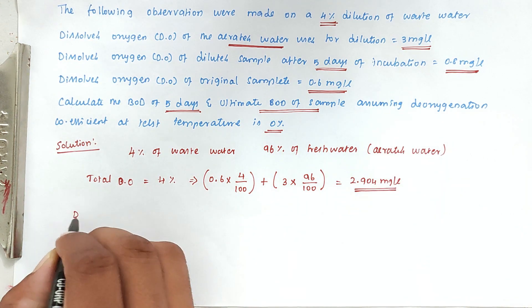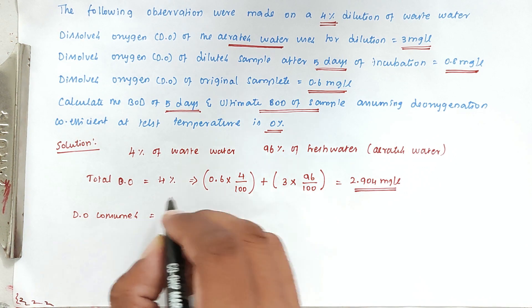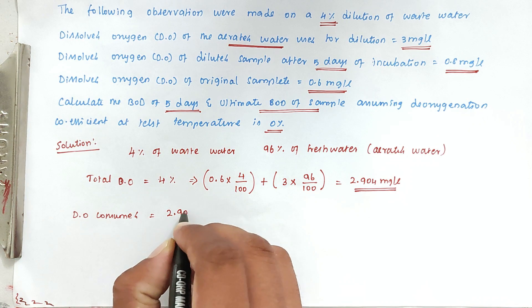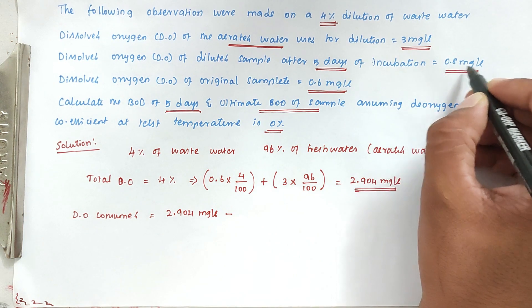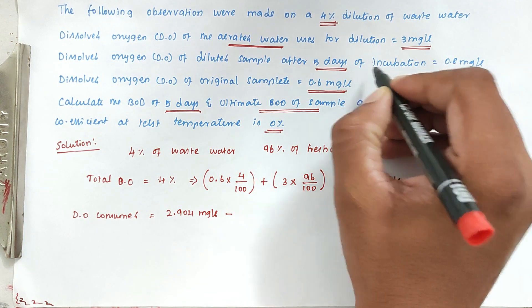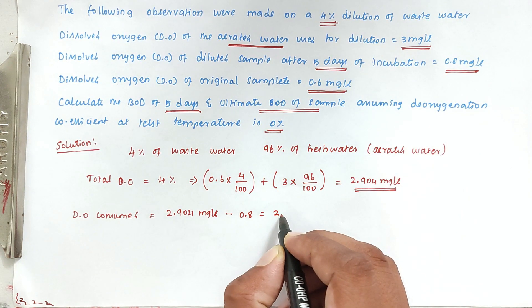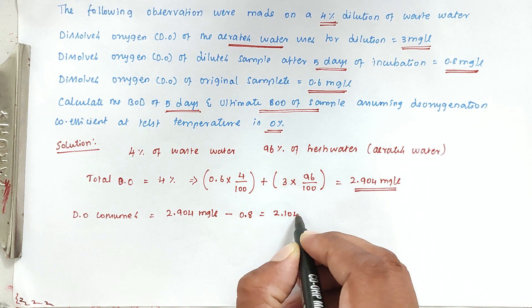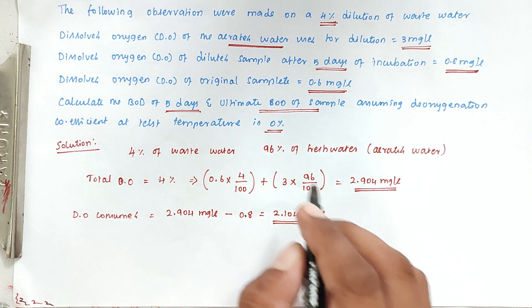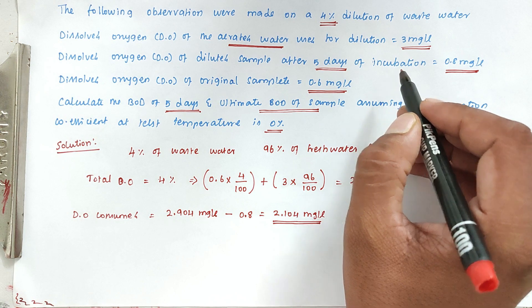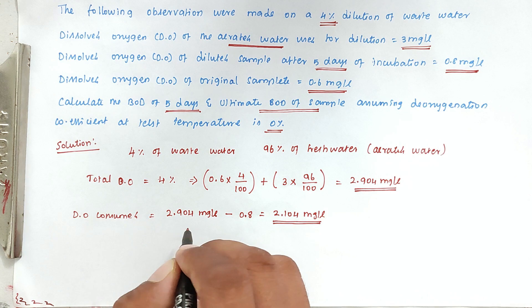Now we calculate the dissolved oxygen consumed. Initially we have 2.904 mg per litre, and finally after 5 days of incubation we have 0.8 mg per litre. So: 2.904 − 0.8 = 2.104 mg per litre of dissolved oxygen is consumed during the incubation of the waste water.